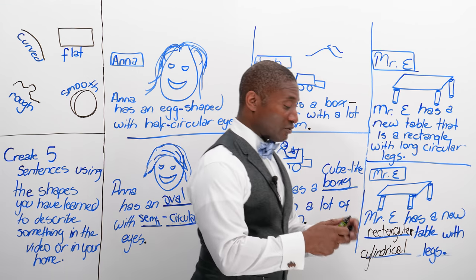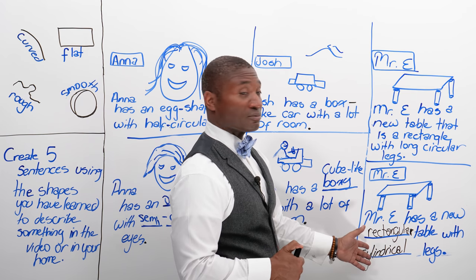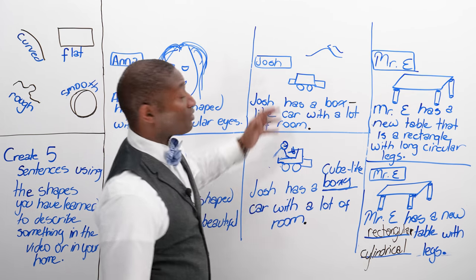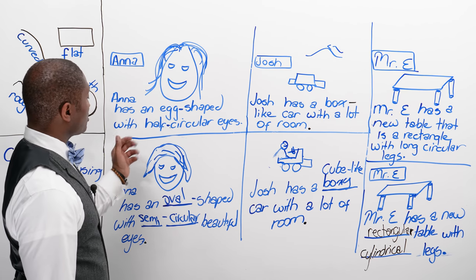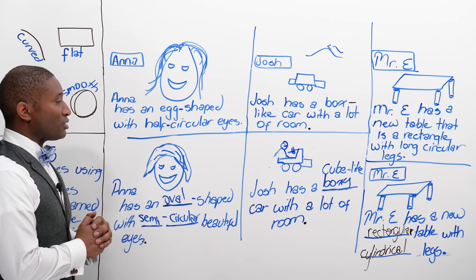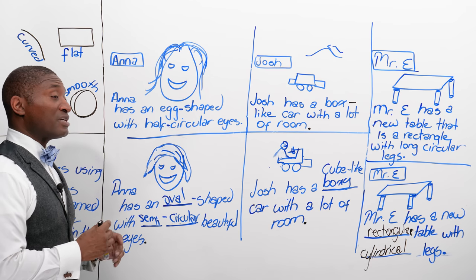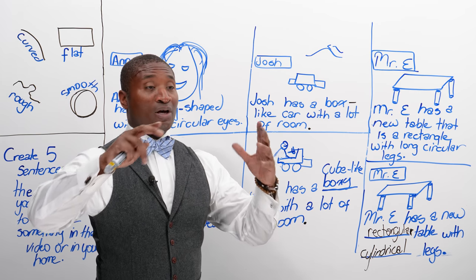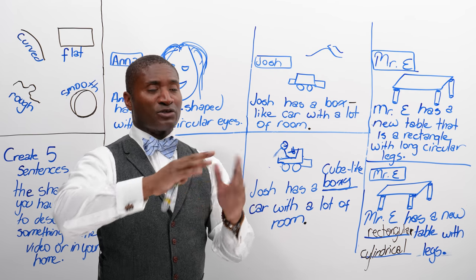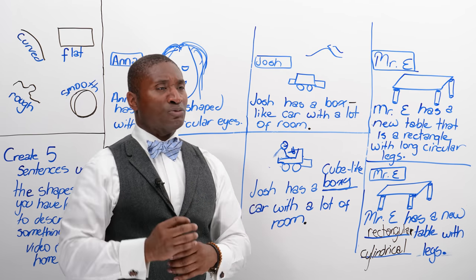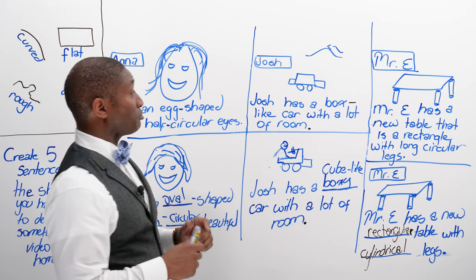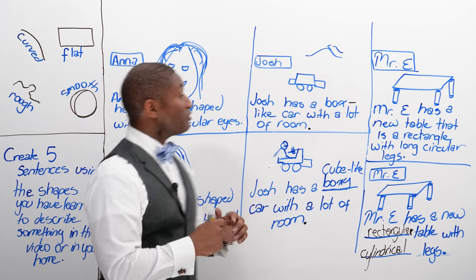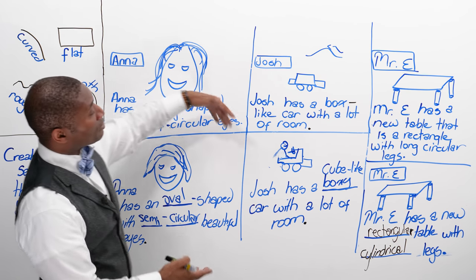So now we've defined something you would find in your house — cylindrical legs on a table. We've described a kind of car you might drive. We've even described how somebody might look. When you put all of this together, we've taken some words that seem different and shown how they take the three basic shapes and combine them to become cones, cylindrical, rectangular, or oblong.